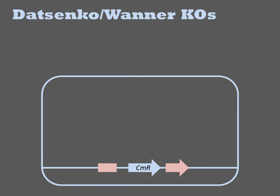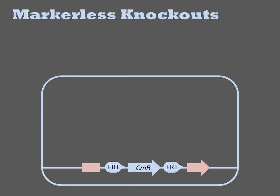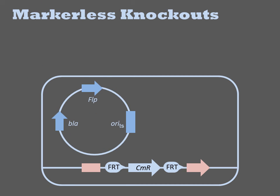The helper plasmid PKD-46 is then cleared from the cell by growth at elevated temperatures. This results in a strain in which the target sequence has been disrupted. As with other genome modification strategies, there are several ways to make them markerless. If the original template sequence contains FRT sites flanking the selectable marker, recombination of the PCR product into the genome will retain these sequences. Transformation with a second helper plasmid encoding a site-specific recombinase will catalyze the excision of the intervening marker, leaving behind only a single FRT site in the genome.